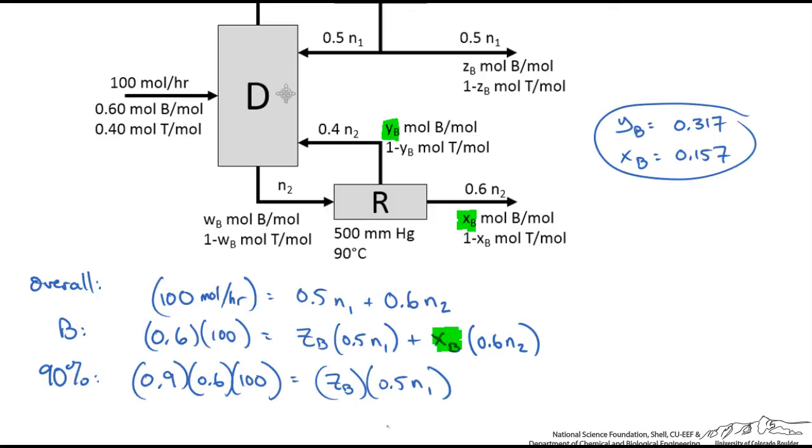Now you should see that we have three equations, three unknowns. We could solve for N1, N2, and ZB. When I do that, I get N1 equals 123.6 moles per hour, N2 equals 63.7 moles per hour, and ZB equals 0.874 moles of benzene per mole.